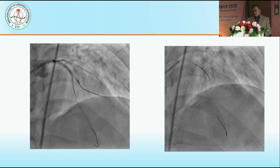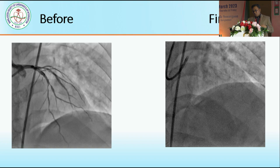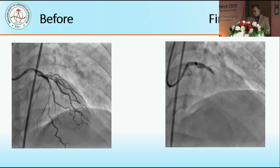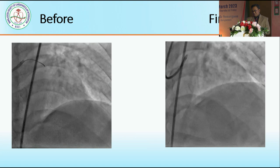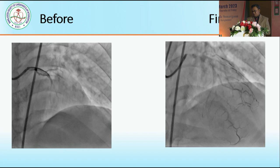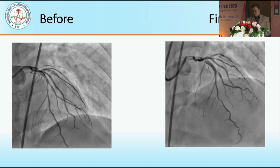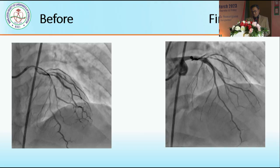At that point we took out the LAD diagonal wire. As Dr. Shamswarwar mentioned, we have to consider the side branch — we are very cautiously looking at what will happen there. We considered that the side branch is as before, with no extra compromise of the side branch supply. So we try to keep it simple — the side branch has TIMI flow as previously shown. Here we conclude the case.